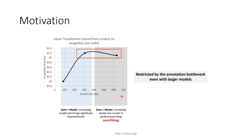This graph outlines the problem. The x-axis represents the model size and the y-axis represents the image accuracy. When the data is greater than the model size, the model brings significant improvements in accuracy. However, when the data is less than the model size, the accuracy dips due to overfitting. Hence, we can say that visual transformers are restricted by the annotation bottleneck even with larger models.